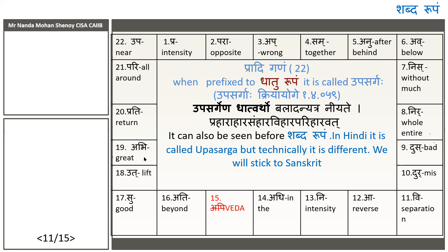Ashtadhyayi itself means 8 chapters. It also has 4 Padams, and within each Padam you have Sutras. 'Upasargaa Kriya Yogi' is the Sutra of the 1st Chapter, 4th Padam, 59th Sutra. One important contrast among the 22 Upasargas: the 15th one — 'Api' — is used only in the Vedas. So technically we have only 21 Upasargas for general usage. Similarly, in Dashalakaras, 'Late' was used only in the Vedas.